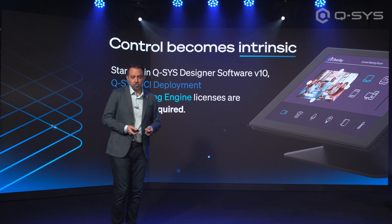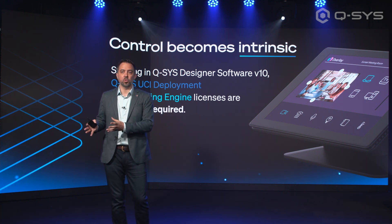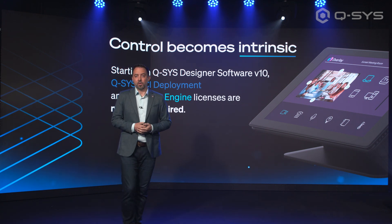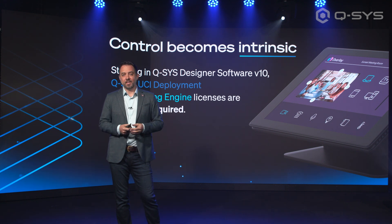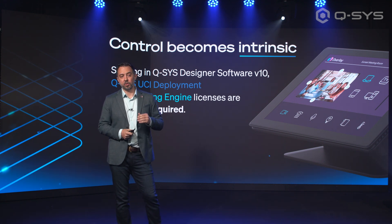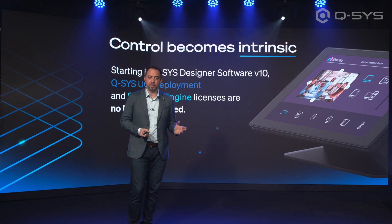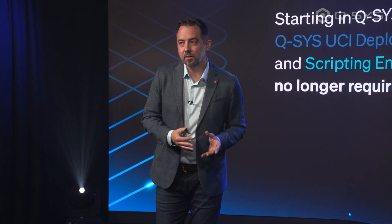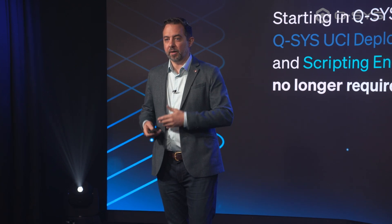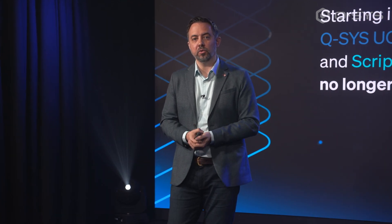In order to make this change, we also need to build the cost of that functionality into the base cost of the core, and that is something we're going to be doing. But I want to be clear — the cost we're building into the cores is actually less than today's cost of a scripting and UCI license. So for the 80% of you that use scripting and UCI with every project, this is actually going to be a price decrease. For the 20% not using scripting and UCI all the time, this is a great opportunity to reevaluate whether there's some value in Q-SYS control you can take advantage of.